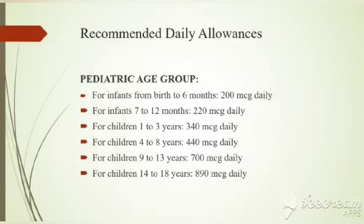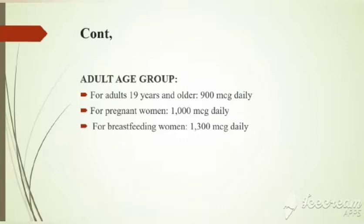The daily allowance for copper: for infants up to 6 months, 200 MCG daily is recommended; for infants 7 to 12 months, 220 MCG daily. Adults from 19 years and older require 900 MCG daily. For pregnant women, 1000 MCG daily is recommended, and for breastfeeding women, 1300 MCG daily.